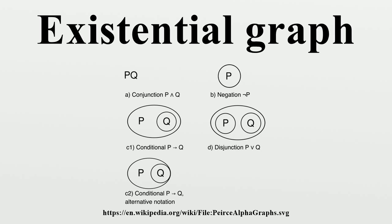or Boolean complementation. Hence an empty cut denotes false. All subgraphs within a given cut are tacitly conjoined.